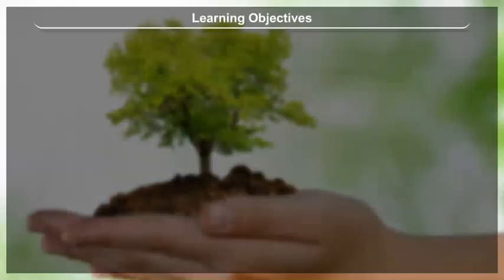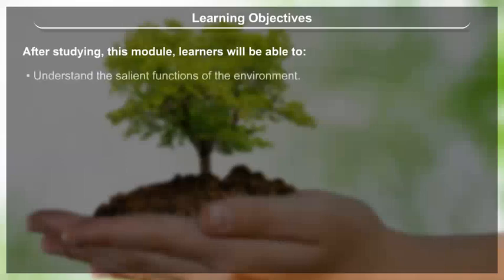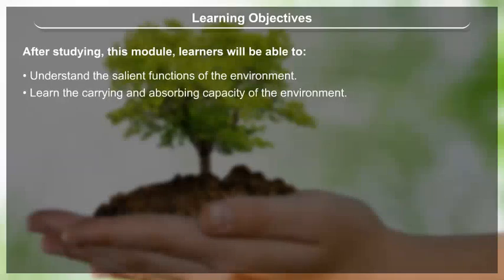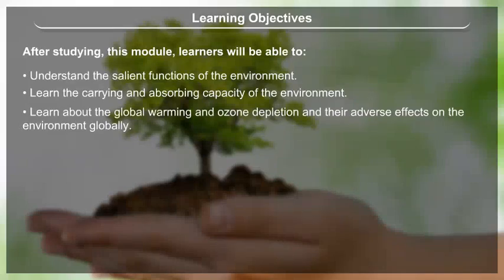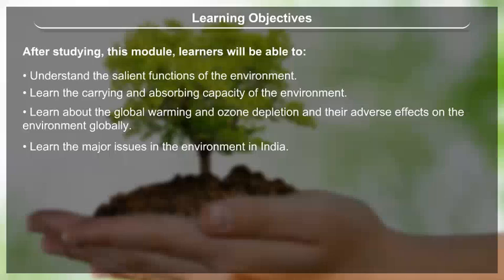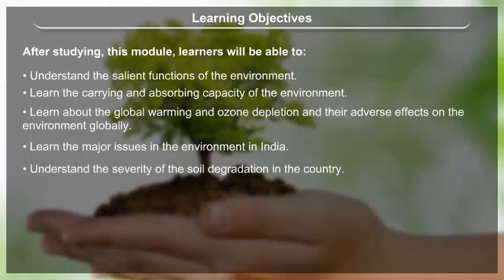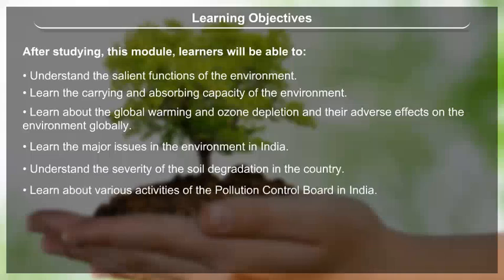Learning Objectives: After completing this module, learners will be able to understand the salient functions of the environment, learn the carrying and absorbing capacity of the environment, learn about global warming and ozone depletion and their adverse effects on the environment globally, and learn the major issues in the environment in India, including the severity of soil degradation in the country and various activities of the pollution control board in India.